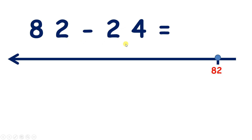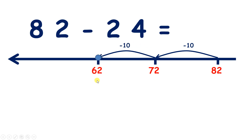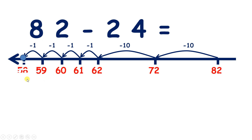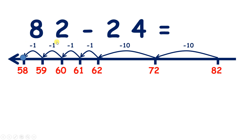Now we have 82 take away 24. Pause the video and see if you can use the number line to subtract two tens, then four units. So if we start on 82, subtracting ten takes us to 72 and back another ten takes us to 62. So we've subtracted two tens. Now we need to subtract our four units — we go back one to 61, then 60, 59, 58. So we've counted back four units. So 82 take away 24 equals 58.